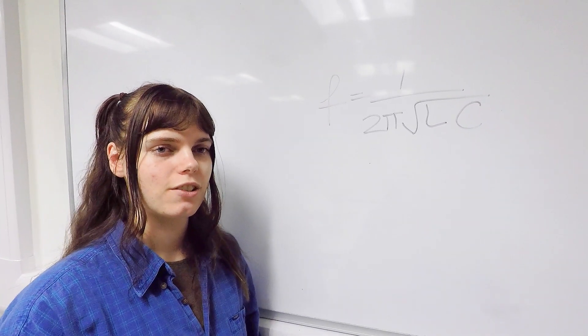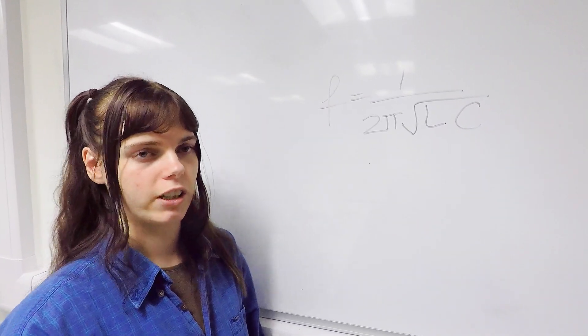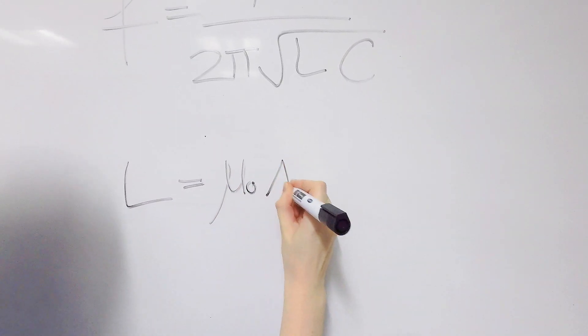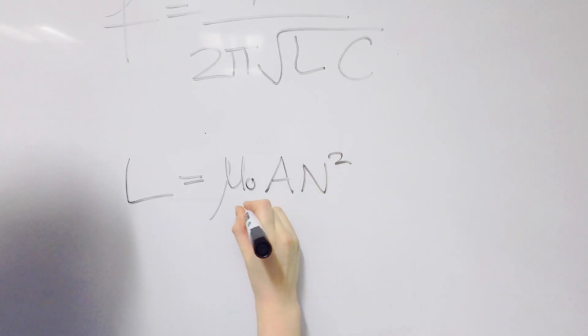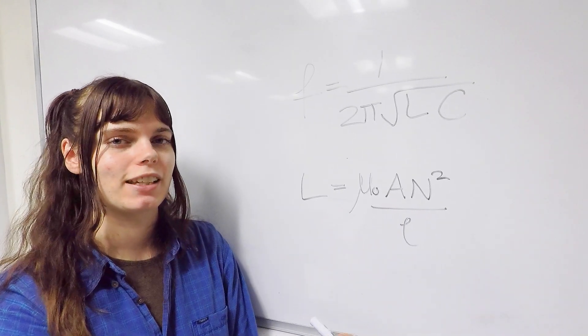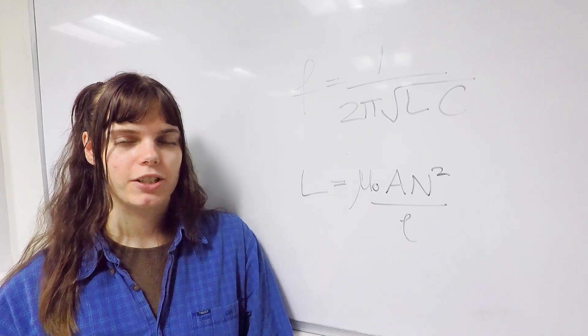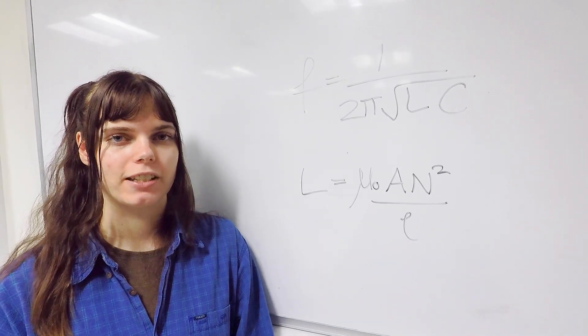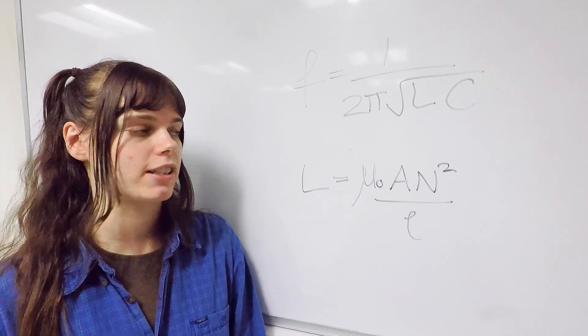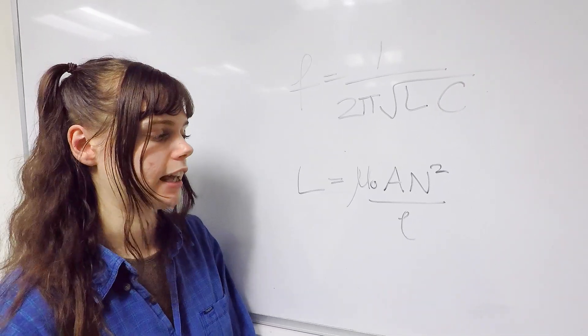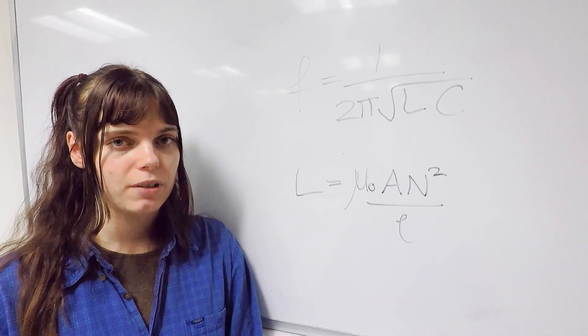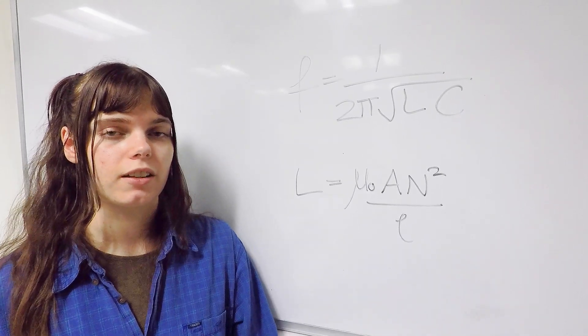For our resonators we can then use the formula for the inductance of a solenoid. Mu naught is the vacuum permeability and a is the cross-sectional area of the solenoid. We keep this constant because we want to be able to slip the resonator on and off our sample tube. However, unlike the loop gap resonator, we are able to choose n, the number of turns, and l, the length. Together with the capacitance, this gives us three parameters with which we can tune our resonant frequency.